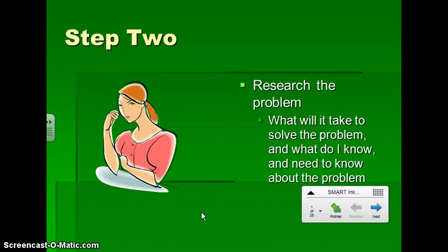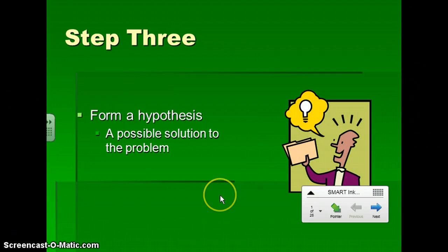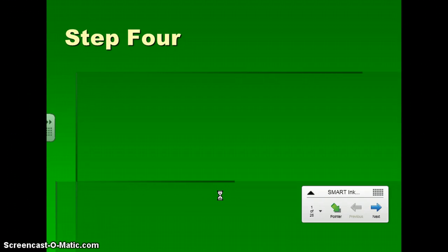We're going to try to find out what it will take to solve the problem, what we need to know, and then what we need to know about the problem to further investigate. The third step is that we're going to form a hypothesis, a possible solution to our problem, based on the research that we've done.